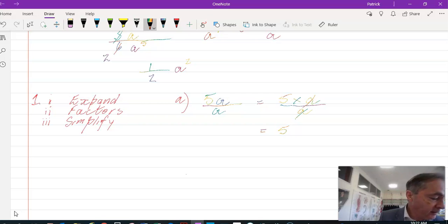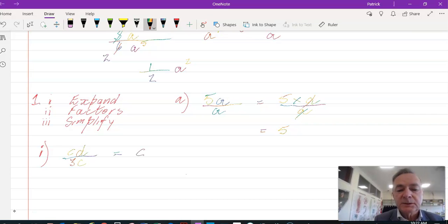Let's have a look at part i: cd over 3c. Expand that out, that equals c times d over 3 times c. We've got common factors, which is part 2. c's a common factor, so we're left with d over 3.